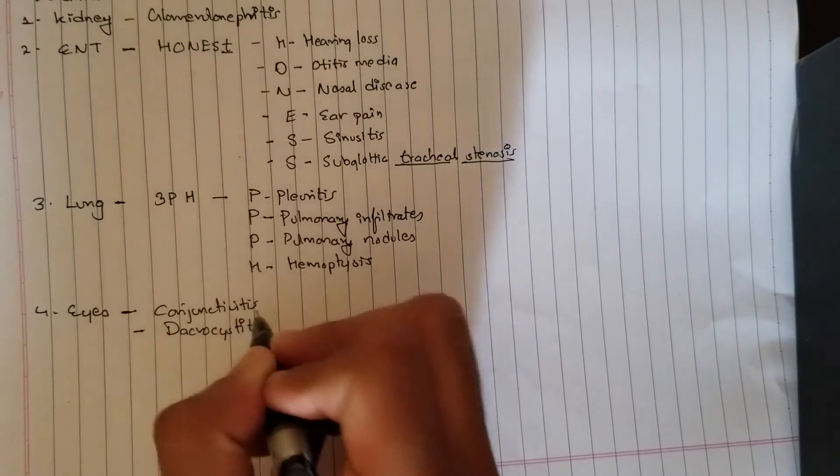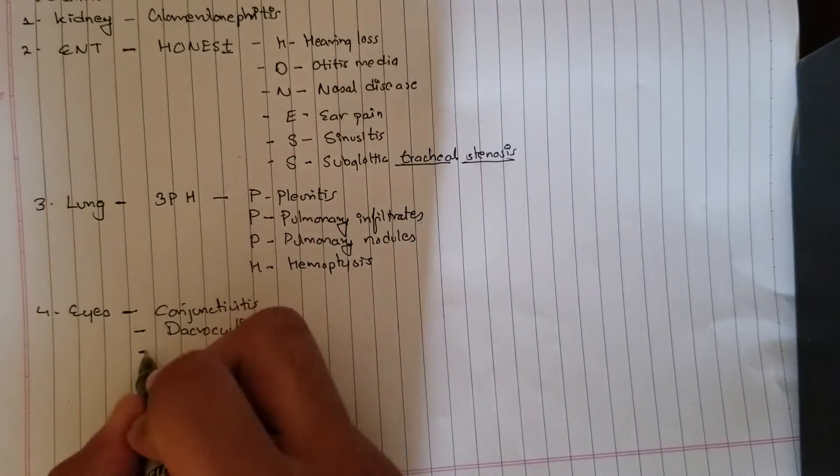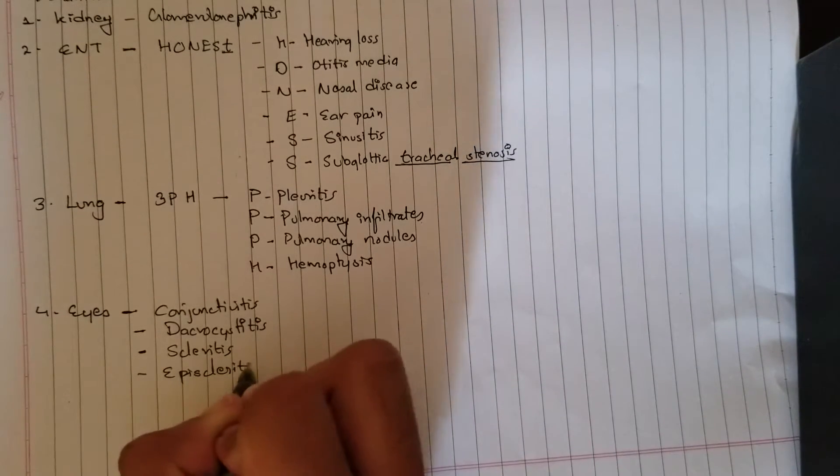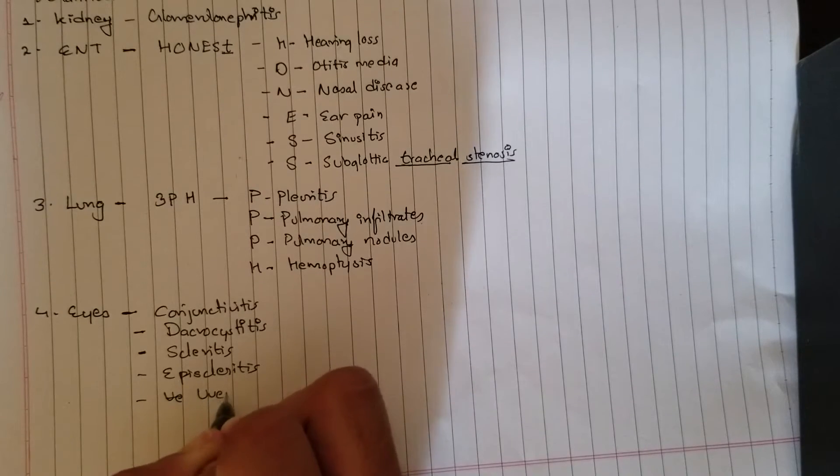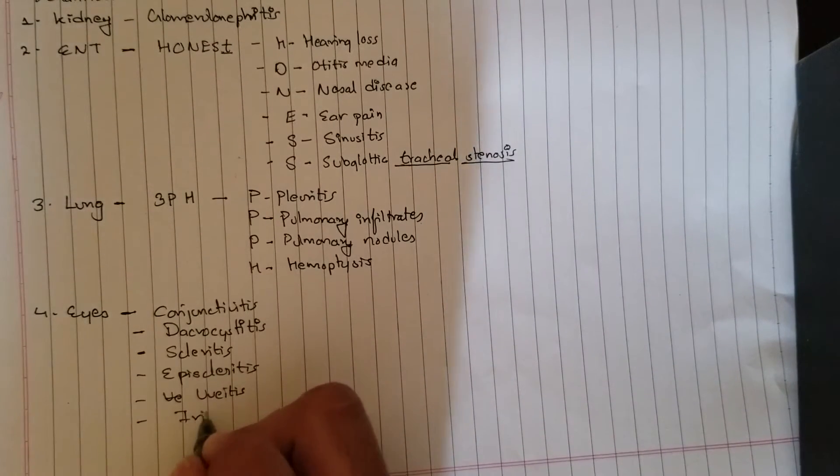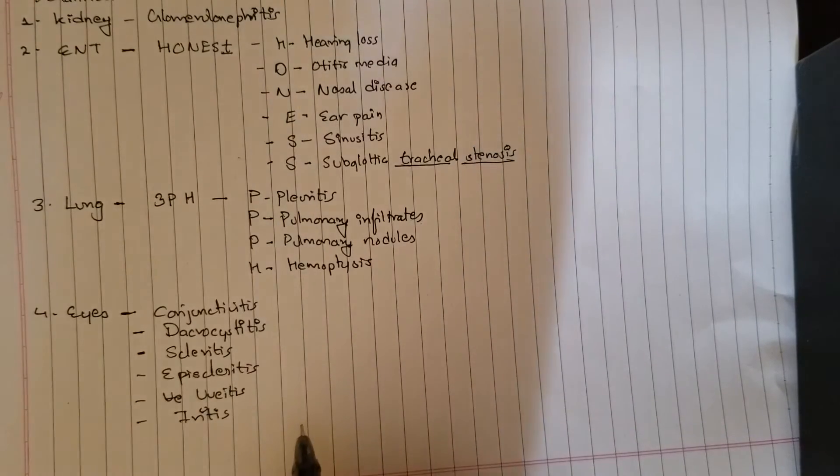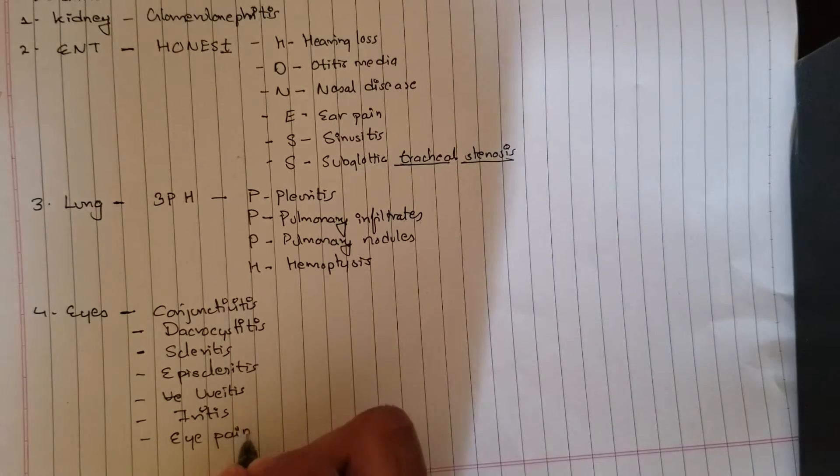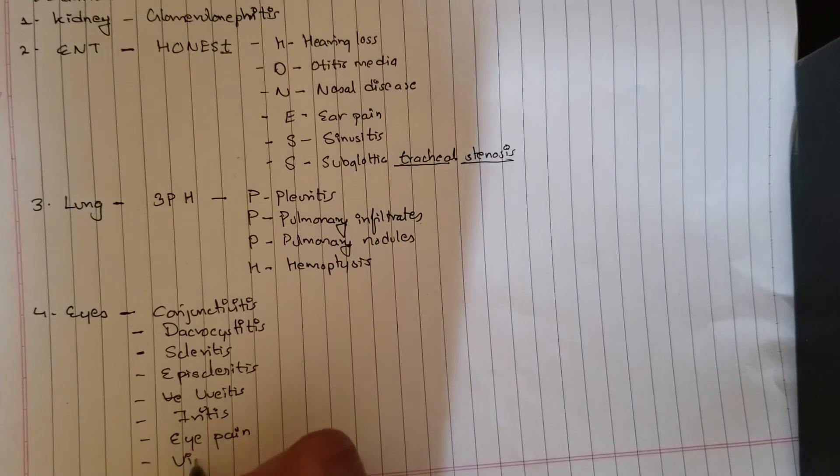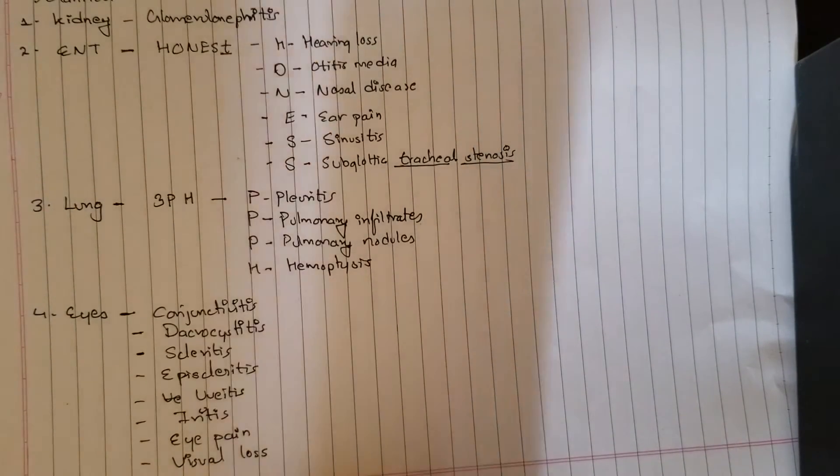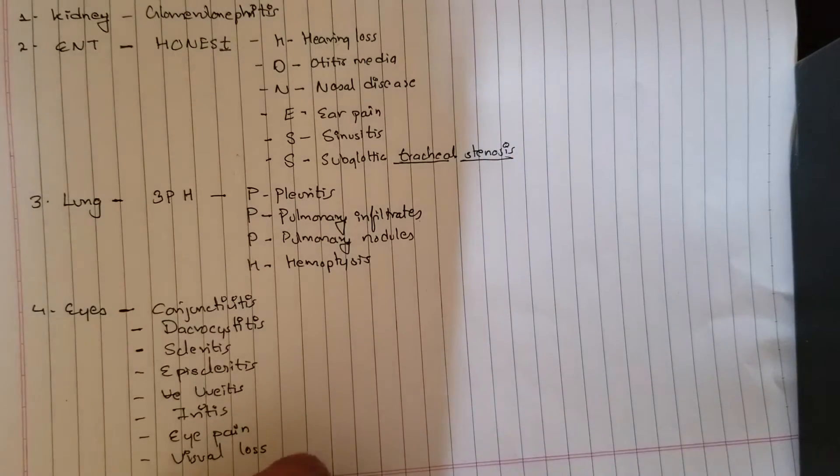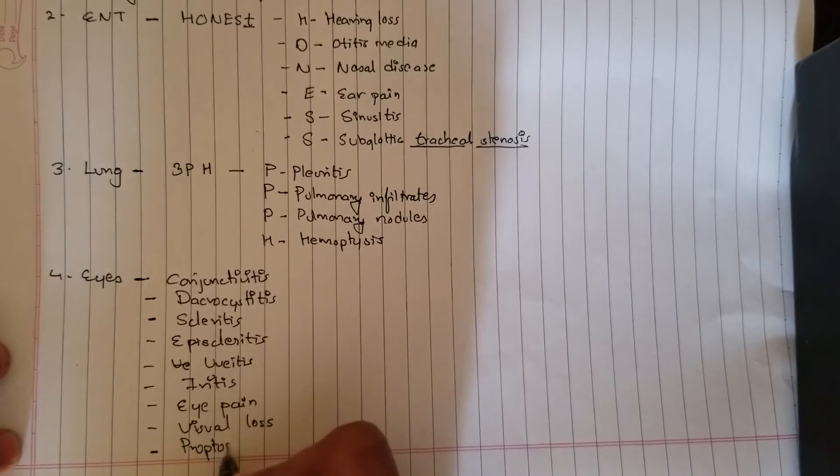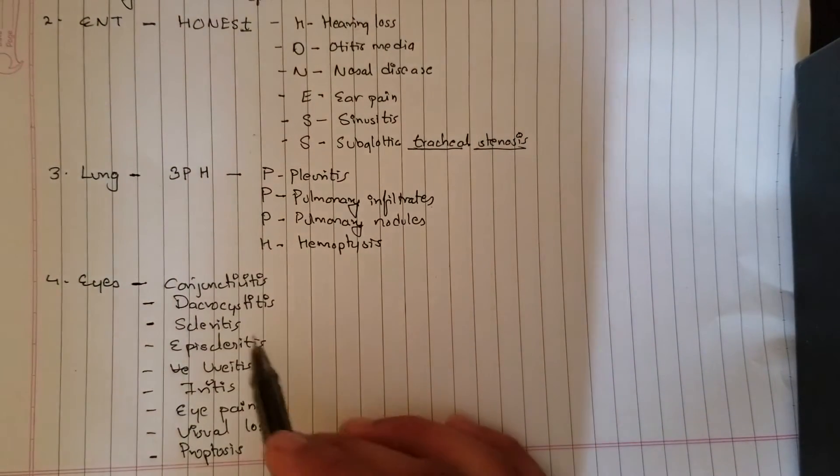Dacryocystitis, inflammation or infection of the lacrimal sac. You can find scleritis, episcleritis, uveitis, and iritis. When there is inflammation in the eye, you can also feel eye pain. There can also be visual loss, and sometimes due to lesion in the retro-orbital mass, you can also manifest proptosis.